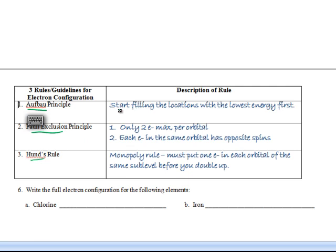Now first, Aufbau. Start filling with the locations with the lowest energy first. So for instance, if you have to put 20 electrons in an atom, you're going to start with the 1s. Once that's filled, then you're going to go to 2s. Once that's filled, you're going to go to 2p, and so forth.